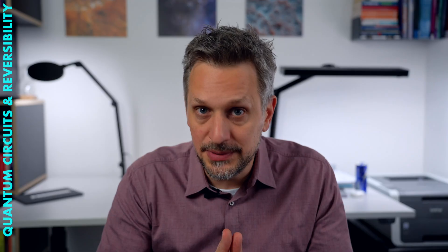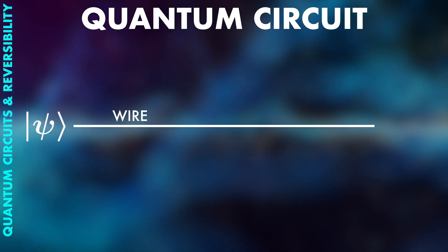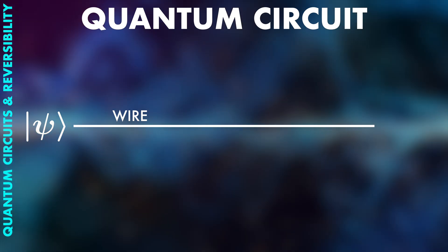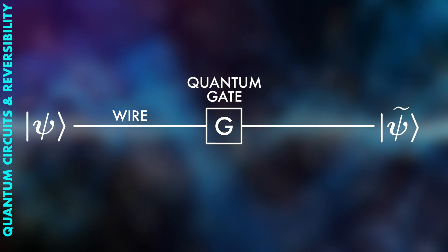And in quantum computing, we have a circuit model that works pretty much the same. We also have wires, even though in a quantum computer, this will mostly not be literal wires, but a particle being moved somewhere or just time passing. There are also quantum gates and those operate on qubits and change them in some way.